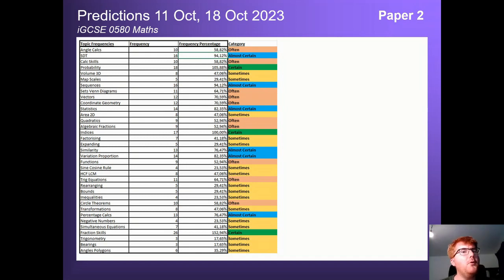And if you want more information on the Paper 2, I've summarized it here for you as well. So we've just gone through the almost certain and certain categories, but notice things like angle calculations come up 58% of the time here. If we look at functions, which is more of a Paper 4-ish topic, at 52.9%, if you have circle theorems, again we haven't mentioned that today, it's at 58.8%. So do be aware once you're happy with those almost certain and certain topics, then make sure you focus on the often topics afterwards.